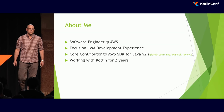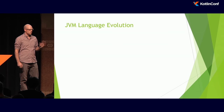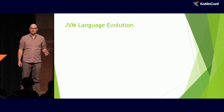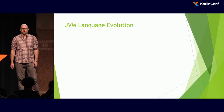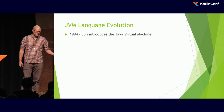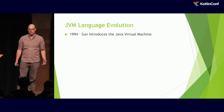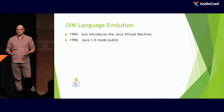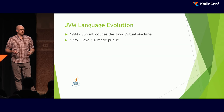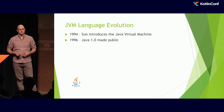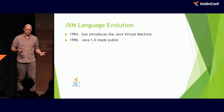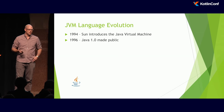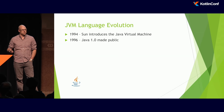Before we jump into the actual tips, I want to do a very quick trip down memory lane looking at the JVM language evolution. In 1994, Sun introduces the JVM. A couple of years later, we get Java. At this time, if you were going to write a library targeting the JVM, obviously you did it in Java because it was the language around at the time — you got maximum compatibility and interoperability.